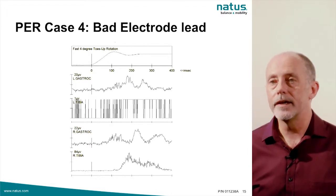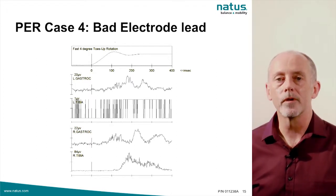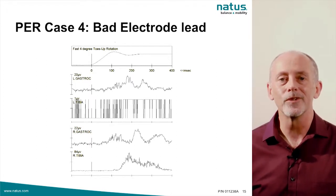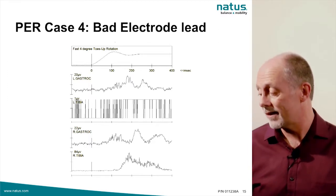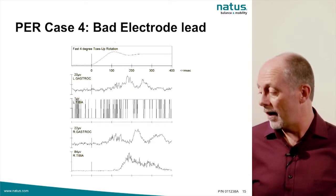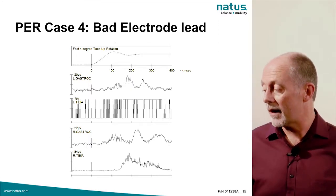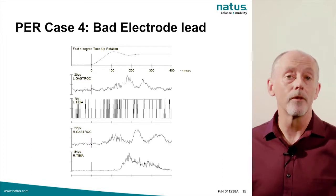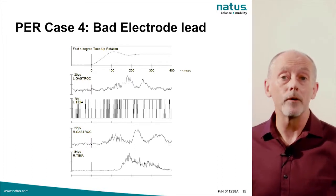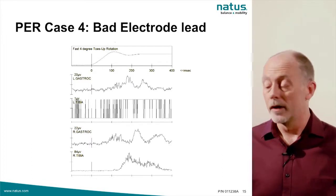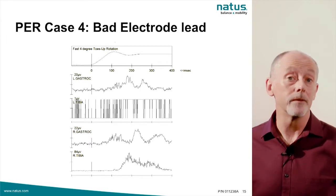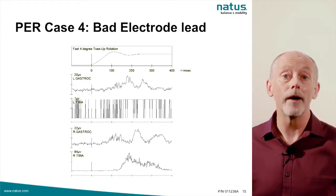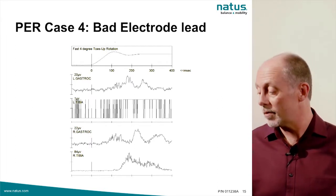This is a real-world test, and in the real world electrodes and wires go bad — and that's what it looks like when you've got a bad electrode lead. Typically the way to repair that is to first try replacing your disposable electrode. If that doesn't resolve it, you may have a bad electrode wire that needs to be replaced.